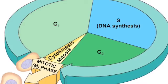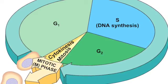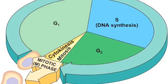The cell must go through interphase before going through mitosis. Interphase is divided into three subphases: G1 phase, S phase, and G2 phase.